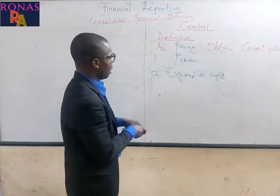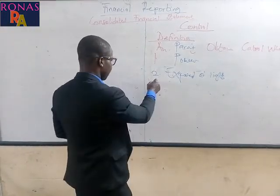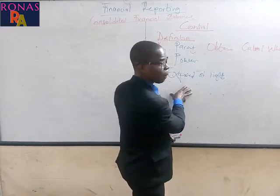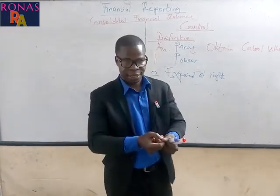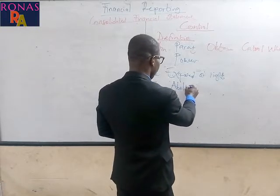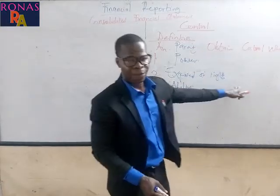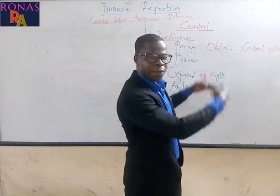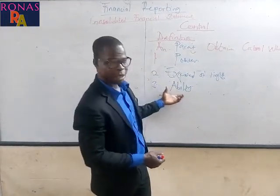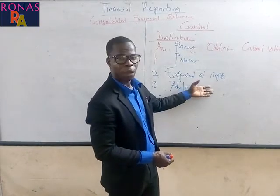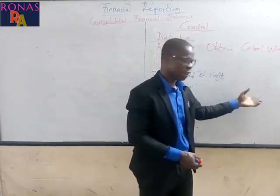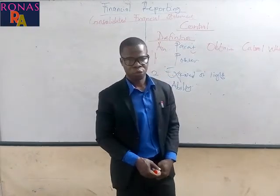The third condition has to do with when the parent has the ability over the investee to influence the investee's returns. So the third one is: any time a parent is having the ability over the investee to affect or to influence the returns of the investee, then we say there is control.